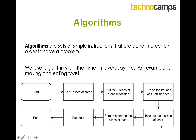We use algorithms all the time in everyday life. Here is a simple example of how to make and eat toast: you start, get two slices of bread, put them in the toaster, turn on the toaster and wait until it's finished, take out the slices, spread butter and eat the toast. One student asked why you can't butter the toast before putting it in the toaster — well if your toaster or grill can handle it, it can, so the algorithm changes. To solve a particular problem you may have more than one algorithm.